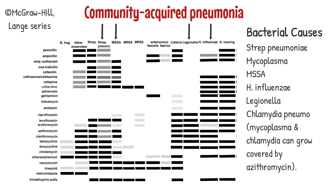Now let's design an empiric regimen for community-acquired pneumonia, abbreviated CAP. The most common bacterial pathogen is strep pneumoniae, followed by mycoplasma pneumoniae, staph aureus or MSSA, haemophilus influenzae, and less commonly legionella and chlamydia pneumoniae.